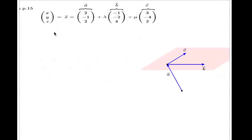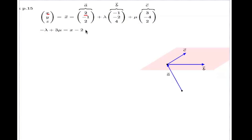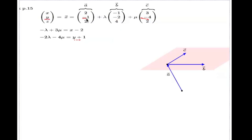So if I equate the left-hand side to the right-hand side, here are my equations. The first component gives: x minus 2 equals negative lambda plus 3 mu. The second component gives: y plus 1 equals negative 2 lambda minus 4 mu. The last component similarly gives a third equation. So we have three equations and two unknowns (lambda and mu).